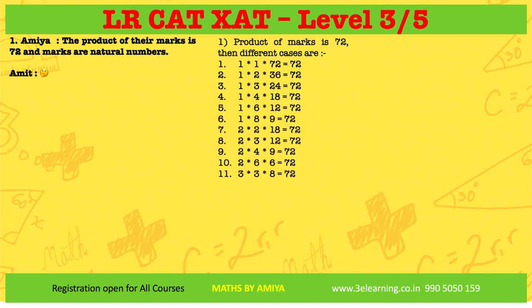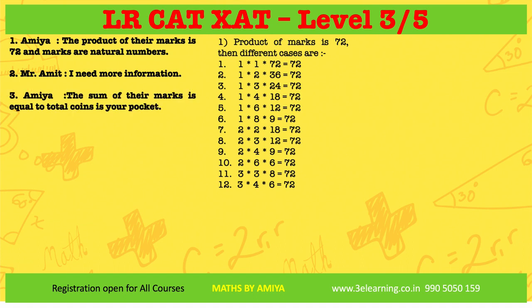When Amit broke 72 into all possible products of natural numbers, he got 12 different combinations. With these 12 combinations in hand, Amit said: 'I need more information.' So Amit asked for more information.